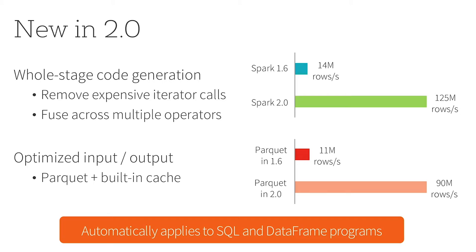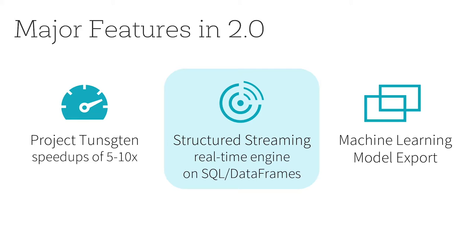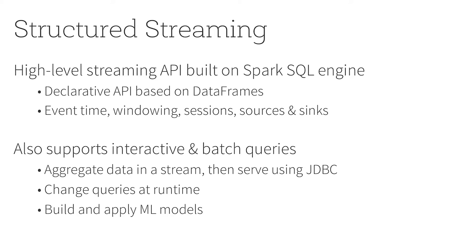The second thing I'll talk about is structured streaming — the higher-level stream processing engine. This is much earlier on, but it's something we're putting out and trying to get feedback on. It's a higher-level streaming API built on the same engine as Spark SQL and DataFrame. It's designed for structured data where you tell us the schema. You won't be able to put in any random Java or Python object, but it's still pretty powerful for a lot of applications.